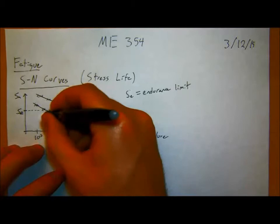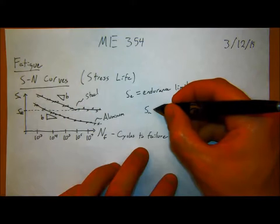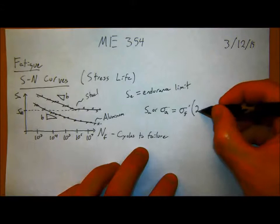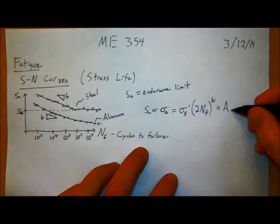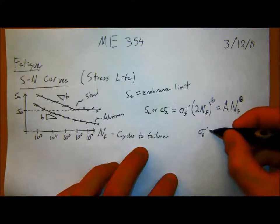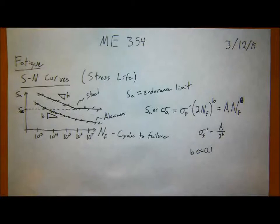In the high cycle SN equation there's really one form you need to know: stress amplitude S_A equals sigma_f-prime times (2N_F)^b, or equivalently written as A times N_F^b, where sigma_f-prime equals A over 2^b. The slope b is around negative 0.1 for most metals, which is generally what we're concerned with for fatigue.